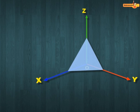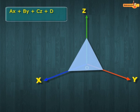Let the equation of the plane be Ax plus By plus Cz plus D equals 0, where D is not equal to 0.